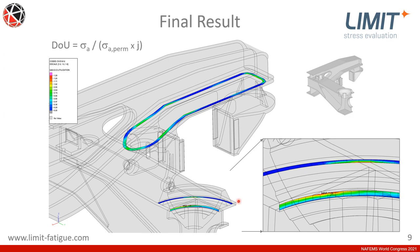At the end we get the final result, which is what we call the degree of utilization — the amplitude divided by the permissible amplitude, including some safety margin. With Limit it is very simple and clearly visible where you have problems: we have color-coded degrees of utilization within the section of the welds. For example, here in this cylindrical part we have areas with a degree of utilization above one, while in the area where the wheelset mounting is welded to the frame we are fine — all root points have degrees of utilization below one, and we simply have to consider some improvements at that position.